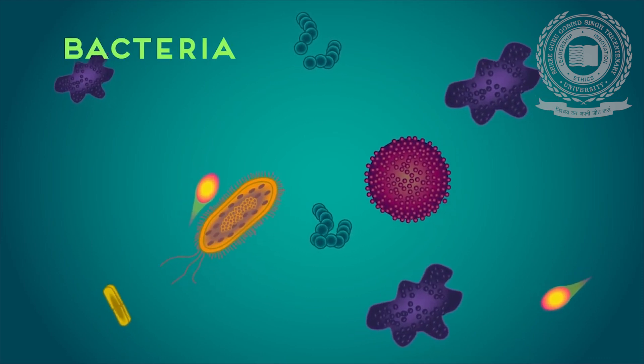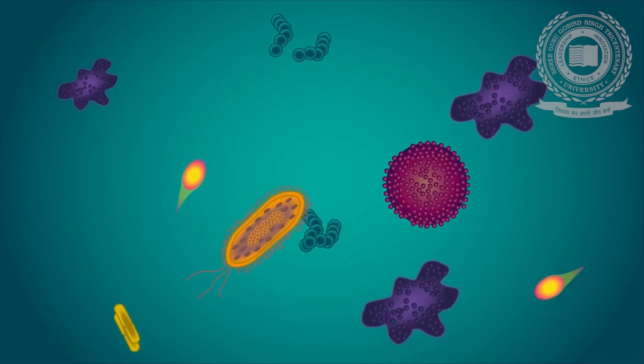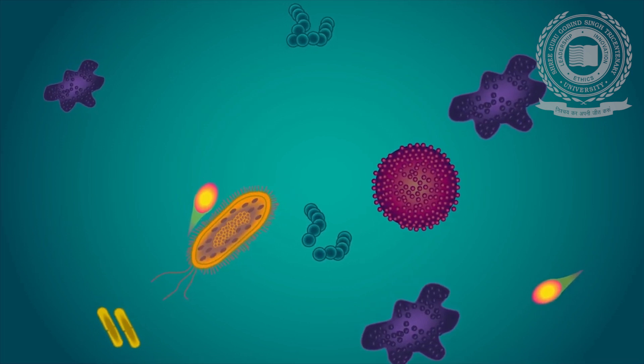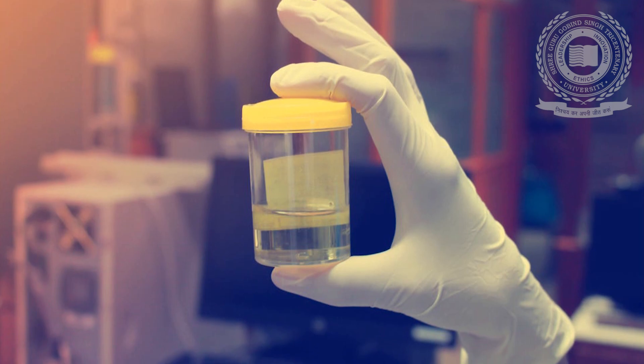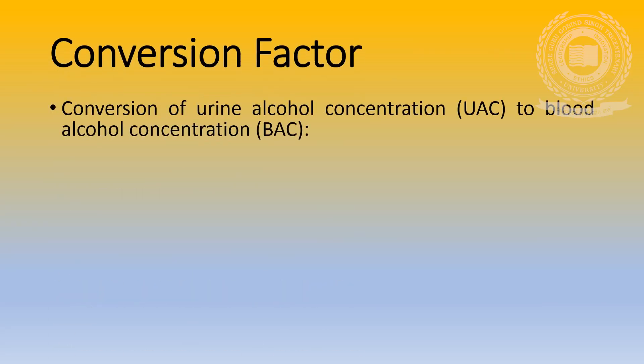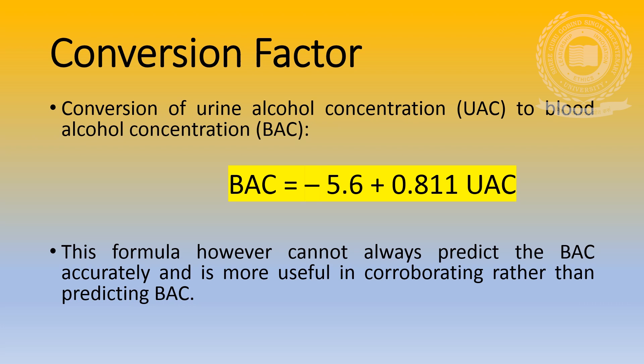In the absence of a urine sample, bacteriological examination of blood should be carried out before interpreting the result of chemical analysis. As far as urine is concerned, a simple conversion factor was developed to convert urine alcohol concentration (UAC) to blood alcohol concentration: BAC = -5.6 + 0.811 × UAC. This formula, however, cannot always predict the BAC accurately and is more useful in corroborating rather than predicting BAC.